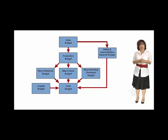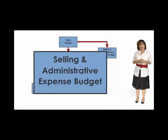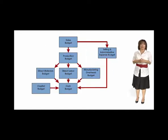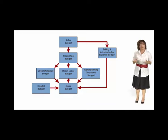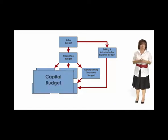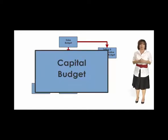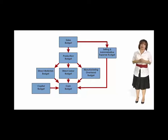Two other budgets also flow into the cash budget. The first is the selling and administrative expense budget, which shows all of the expected expenses in areas other than manufacturing. The second is the capital budget, which shows the expected outlays for long-term assets, such as buildings and equipment.